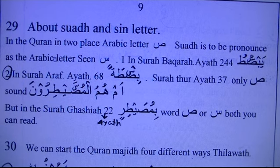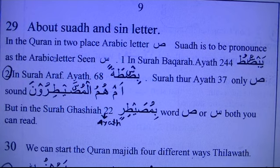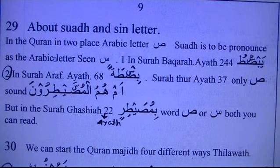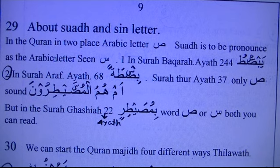You can say Sad, but we will pronounce it as Sin. The first example is Surah Al-Baqarah, ayat number 200 and 244: 'Yabsutu' — but we have to say 'Yabsutu' with Sin. The second is Surah Al-A'raf, ayat number 68: 'Baqsh fortan' — but we say 'Bas fortan', with Sin, not Sad.